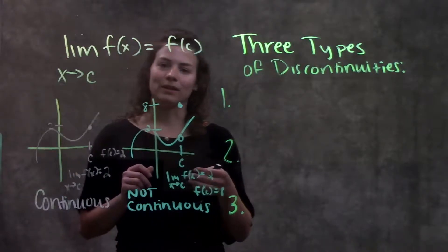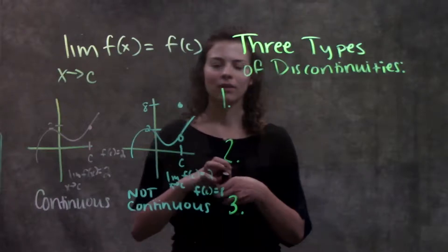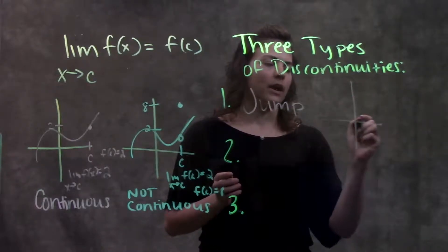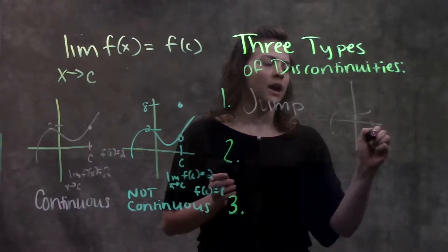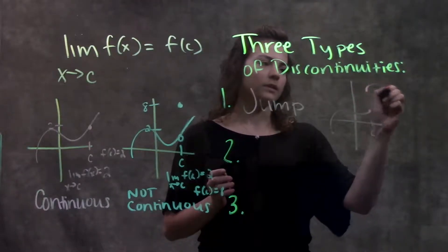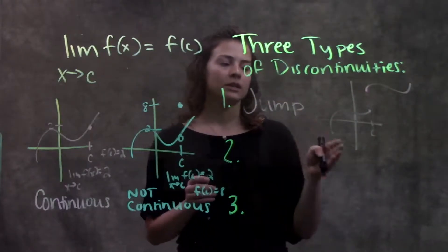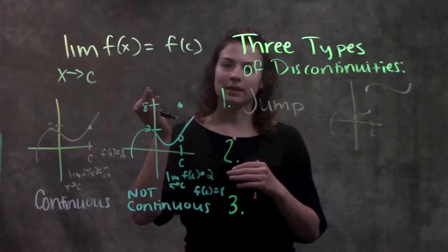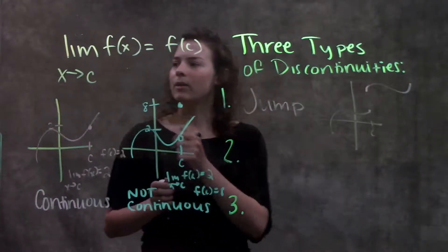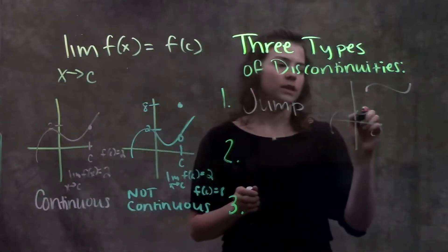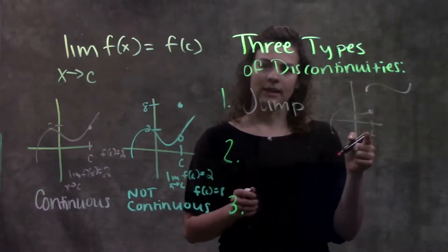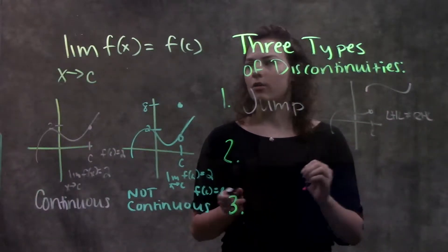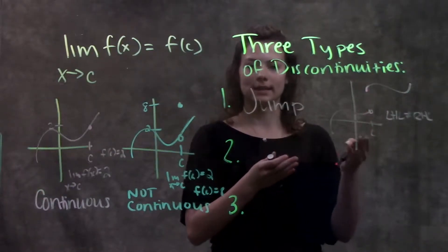Moving on to the second part of this section: the three types of discontinuities. The first one is called a jump discontinuity. On a graph, this looks like a function going along and then suddenly at some value jumping up somewhere else and continuing on. The function is discontinuous at x equals c. Looking at our limit definition, the limit doesn't exist at x equals c because the left-hand limit doesn't equal the right-hand limit, which automatically makes the definition void.